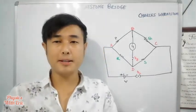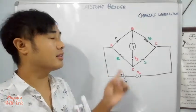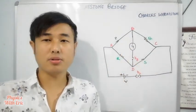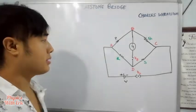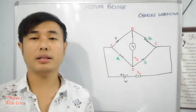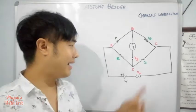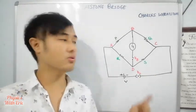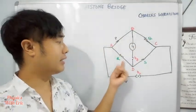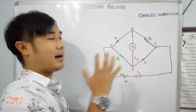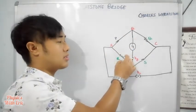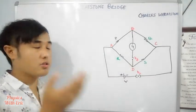The Wheatstone Bridge consists of four resistors. Three of them are known and the last one is the unknown which we want to find. For example, if we know the values of P, Q, and R, we can find the value of S. These are called ratio resistors or arm resistors. One of them is a variable resistance box which can be changed.